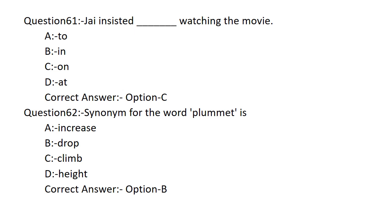J insisted dash watching the movie. Option A: TO. Option B: IN. Option C: ON. Option D: AT. The answer is Option C — ON. J insisted ON watching the movie.